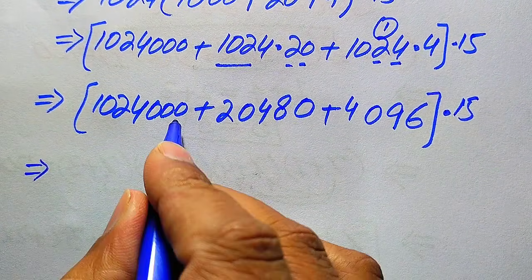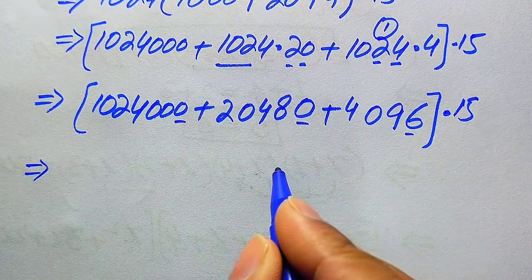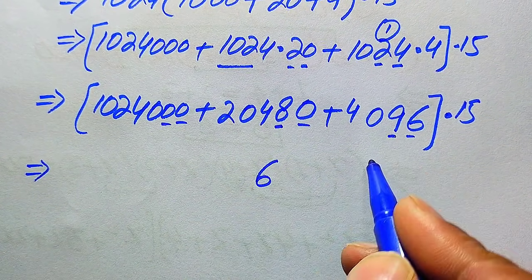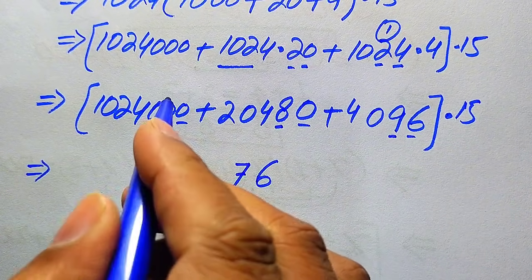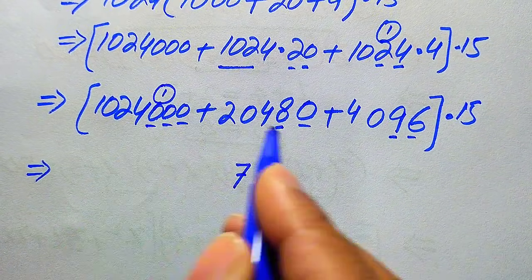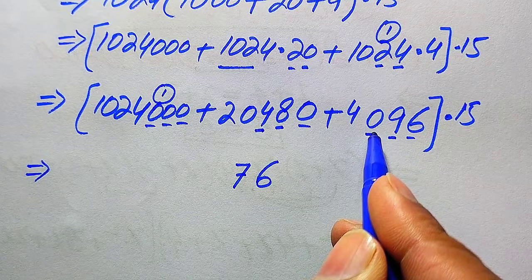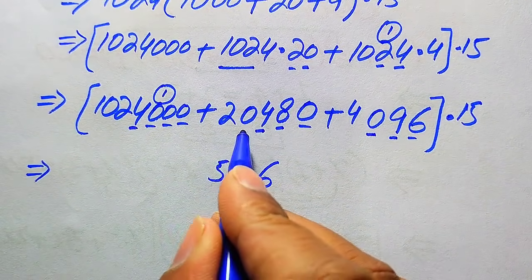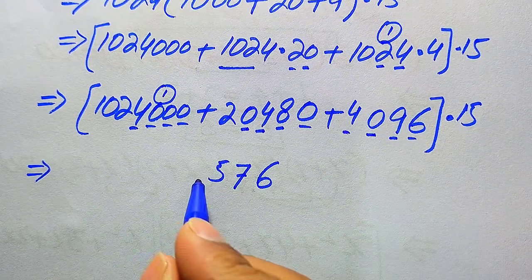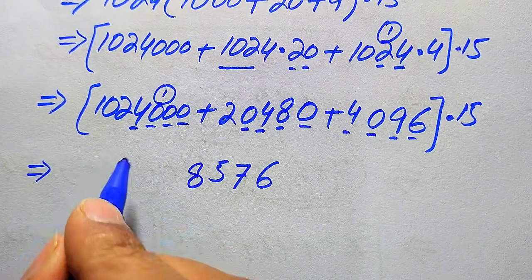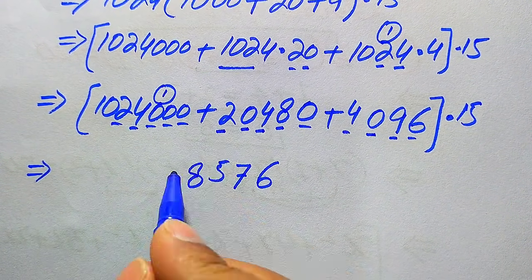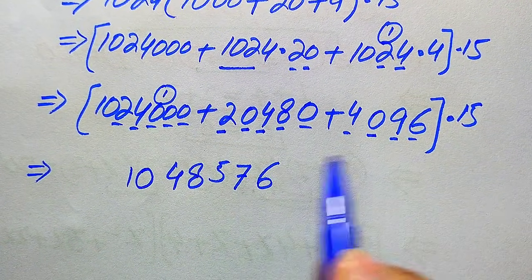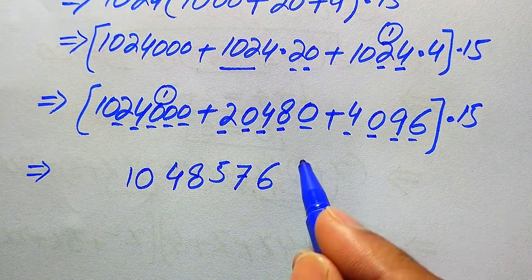Adding the three values column by column: 0 plus 0 plus 6 is 6; 0 plus 8 plus 9 is 17, write 7 carry 1; 0 plus 4 plus 0 plus 1 carry is 5; 4 plus 0 plus 4 is 8; 2 plus 2 is 4; then 1 and 0. The total is 1,048,576, and we still need to multiply by 15.